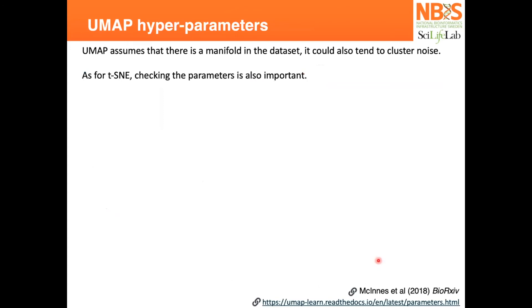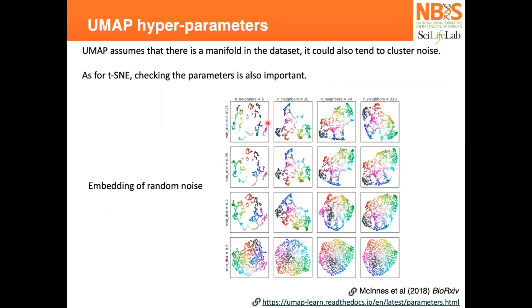As with t-SNE, UMAP has many hyperparameters you need to think about. Here you have the number of neighbors and the minimum distance between points. This dataset is just random noise, but you can create many artificial clusters from random noise. There's nothing in this data.